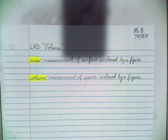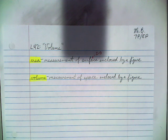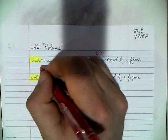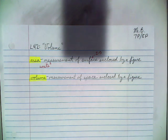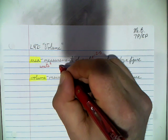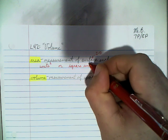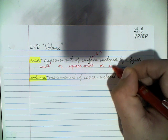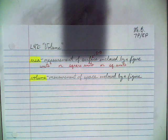Area is the measurement of surface enclosed by a figure. Surface is two-dimensional, so area is also going to be two-dimensional. Which means its units are going to have an exponent of 2 because it's two-dimensional. We could write that out as square units, or abbreviate square as Sq. Each of those mean exactly the same thing.